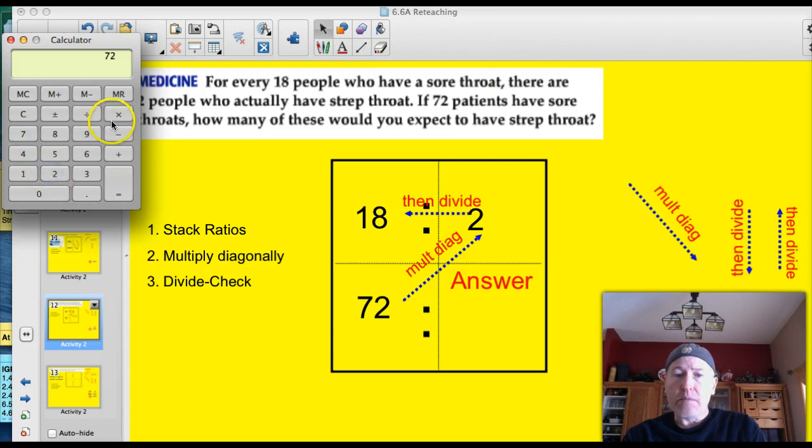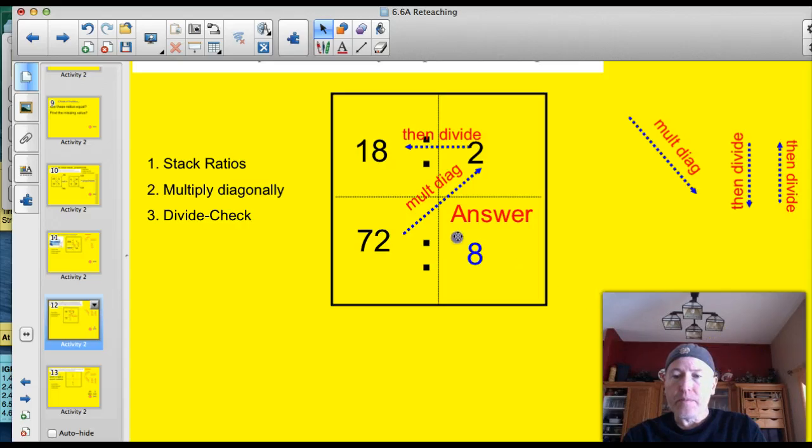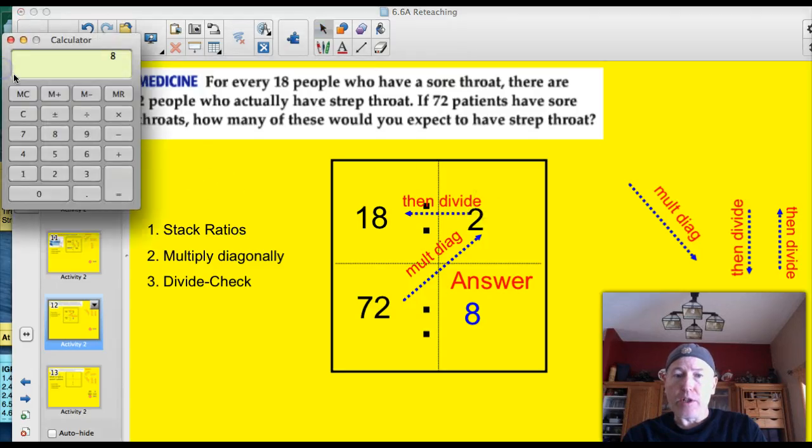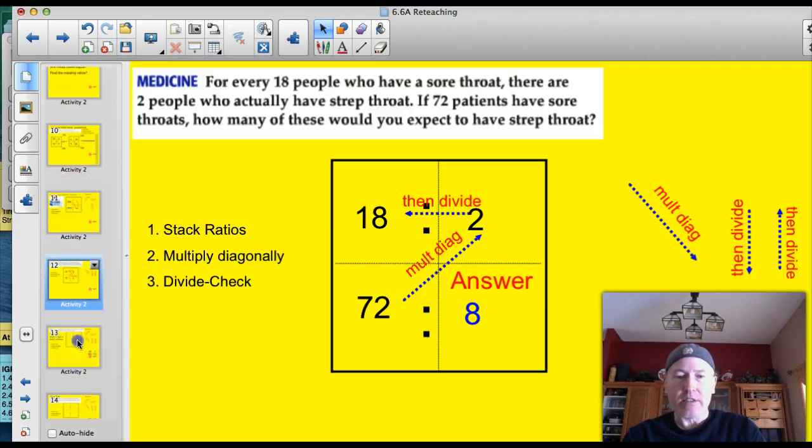Get our calculator out. Clear that baby. 72 times 2 equals 144. And then we're just going to divide that by 18. I got 8. Go down and grab my answer down here. Well, we know that 72 times 2 is 144. So I'm just going to double check and make sure my cross product here, 18 times 8, equals 144. So I check my cross products to make sure they're right, and that's it. It is just a slam dunk. Using the box, it's super-de-duper.